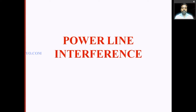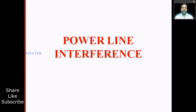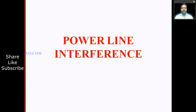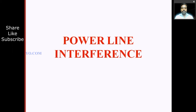Welcome students. In this lesson we are going to study power line interference. Power lines are around 230 volts at 50 Hz frequency — an AC signal. The power line creates an electric field, and that electric field affects our signal. That is interference — interference in the sense of noise, unwanted signal, disturbance, etc.